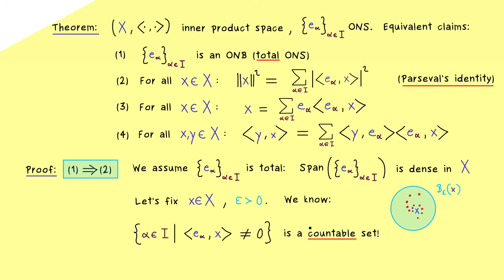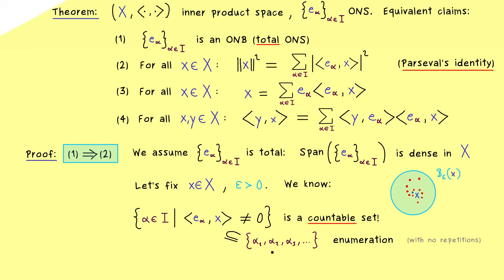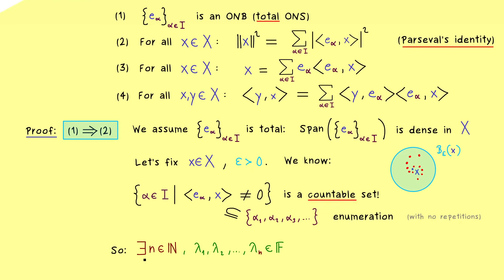Please recall from the last video that it does not matter how large the index set I actually is. The essential contribution to Parseval's identity is always given by a countable set — it could also be a finite set, but let's stick with countable infinity. Hence we choose an enumeration: alpha_1, alpha_2, alpha_3, and so on — a countable subset of our index set I with a bijection to the natural numbers. Now we can describe the denseness of the span with this enumeration: we take the first n members and some corresponding scalars to form a linear combination, and the denseness guarantees we can always find an n such that we lie inside the epsilon ball.